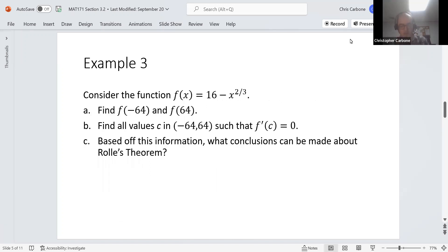And one last example involving that is this. Considering the function f of x is equal to sixteen minus x to the two-thirds power. We first want to find f of negative sixty-four and f of sixty-four. f of negative sixty-four is zero and f of sixty-four is also zero.